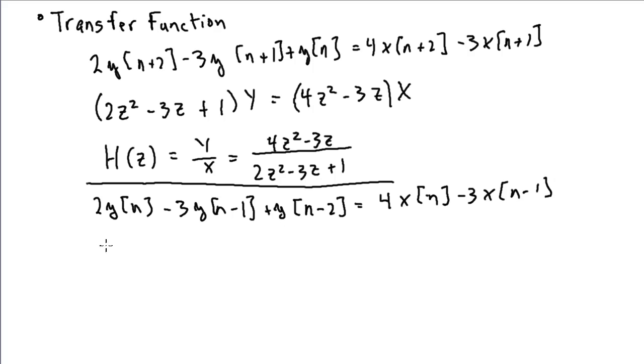Here we would have 2 minus 3z to the minus 1 plus z to the minus 2 all times y is equal to 4 minus 3z to the minus 1 all times x. Again, remember, a delay of 1 corresponds to multiplication by z to the minus 1.